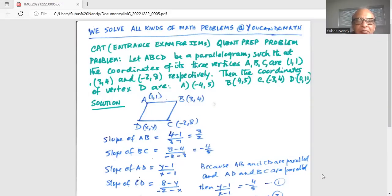Let ABCD be a parallelogram such that the coordinates of its three vertices A, B, C are (1,1), (3,4), and (-2,8) respectively. Then the coordinates of the vertex D are, and we have four options,